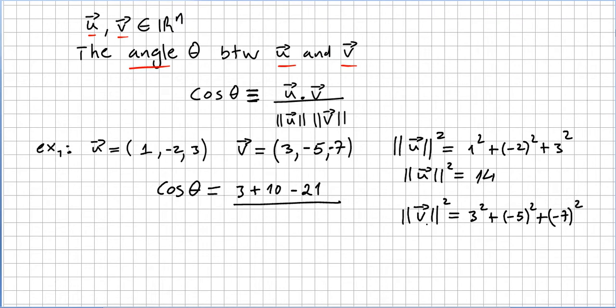Now we get the absolute value of the norm of v squared, so that's 3 squared plus minus 5 squared plus minus 7 squared, and we get 83.